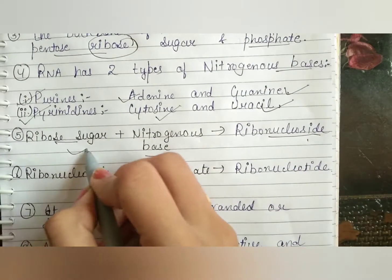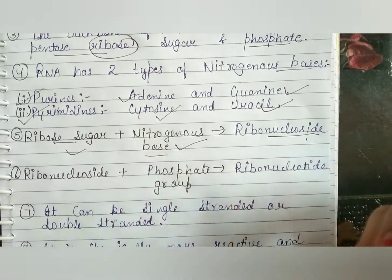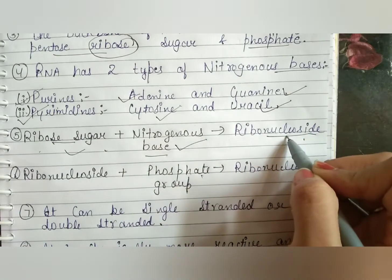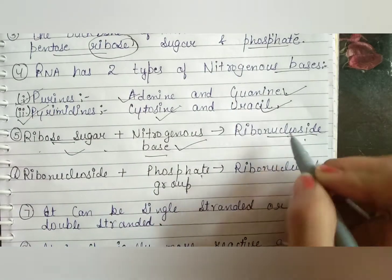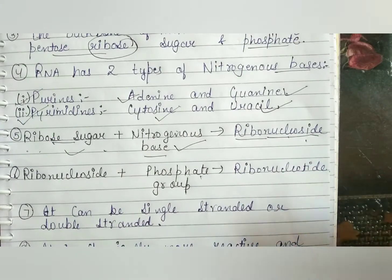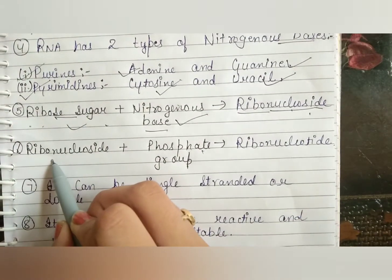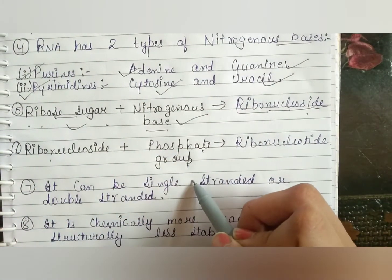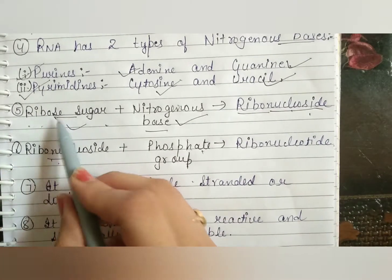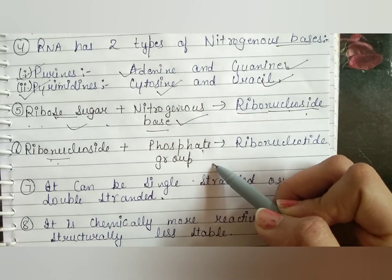A nucleoside is sugar plus a nitrogenous base — that is ribose sugar plus a nitrogenous base. Then, ribonucleoside plus a phosphate group gives a ribonucleotide. So ribonucleoside means ribose sugar plus nitrogenous base, and adding a phosphate group gives a ribonucleotide.